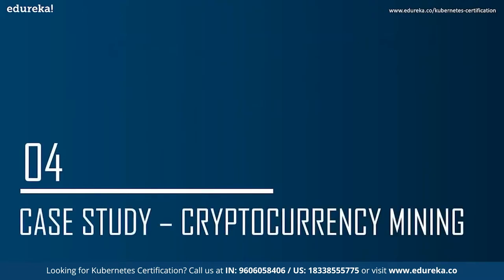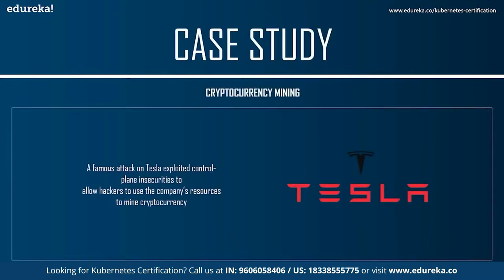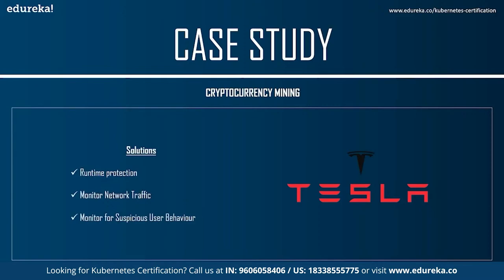Let's look at the case study — cryptocurrency mining. A famous attack on Tesla exploited control plane insecurities to allow hackers to use the company's resources to mine cryptocurrency. Ensuring that only trusted images can run in your cluster would prevent, for example, a bad actor with approved access from running an unexpected mining image. Runtime protection can add another layer of defense so that even if an approved image has a vulnerability allowing code injection into a running container, that code cannot be executed. Monitoring for unusual activities such as unexpected CPU usage can help you spot when your resources are being used by an attacker.